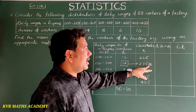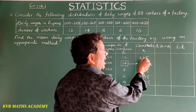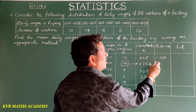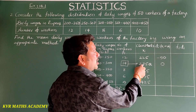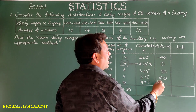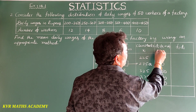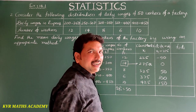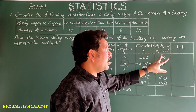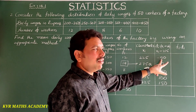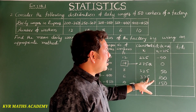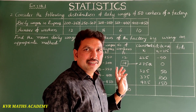Calculating di = xi − 275 for each row: 225 − 275 = −50, 275 − 275 = 0, 325 − 275 = 50, 375 − 275 = 100, and 425 − 275 = 150.